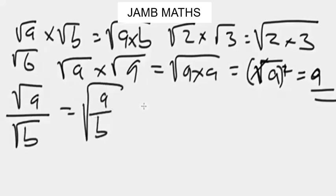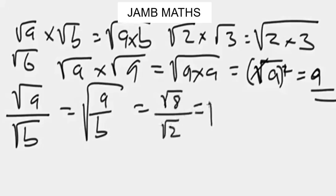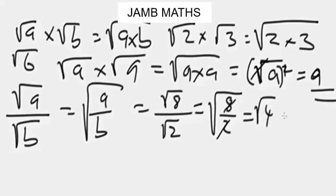Let's use numbers. If we have square root of eight over square root of two, this is the same as square root of eight over two. The two cancels, and we are left with square root of four. Square root of four gives us two — it's plus or negative two, but we use the positive sign — so the square root gives us two. That's the second rule.